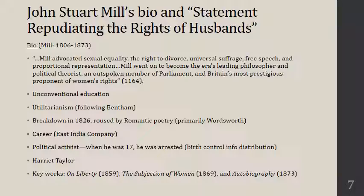John Stuart Mill is going to be a transition here from John Ruskin. John Stuart Mill lives from 1806 to 1873. According to the Longman anthology from which this excerpt is taken, Mill advocated sexual equality, the right to divorce, universal suffrage, free speech, and proportional representation. Mill went on to become the era's leading philosopher and political theorist, an outspoken member of parliament, and Britain's most prestigious proponent of women's rights. Mill was a big deal — well known in society for a number of things, not just his advocacy on behalf of women and his resistance to things like coverture. He advocated universal suffrage — in other words, the vote for women. Gender was really part and parcel of a larger framework for Mill of thinking about a more egalitarian society.